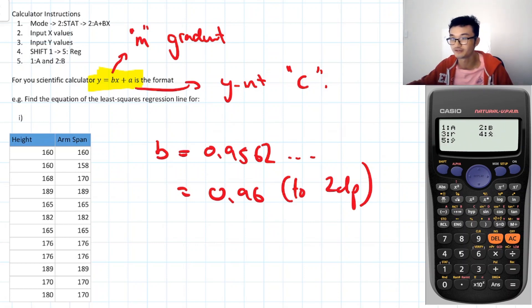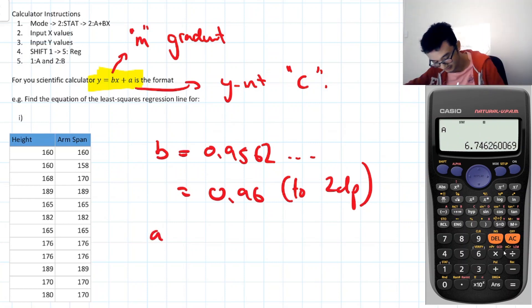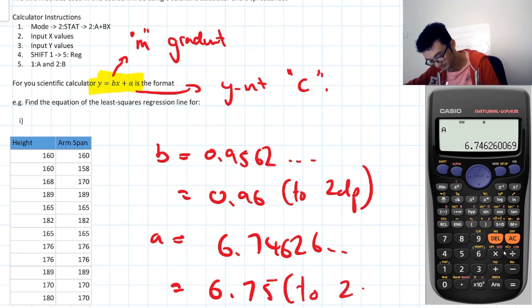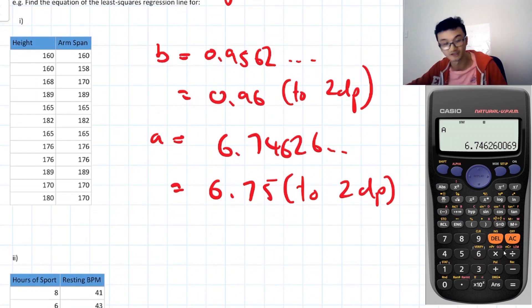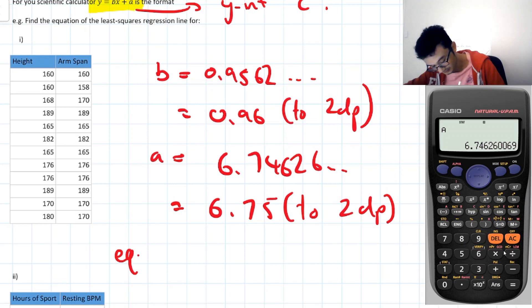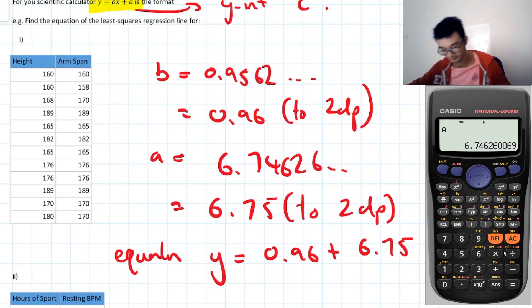And then let's go ahead and find the A value as well. So shift 1, 5 regression, then A, and find that. And so that's our y-intercept, so that's A is equal to 6.74626. So it's going to be 6.75 to 2dp. And so the equation of our line of best fit, so the equation will be equal to y is equal to 0.96x plus 6.75. Okay, so that's our equation of the line of best fit, using this least squares regression method on our calculator.